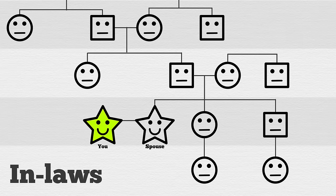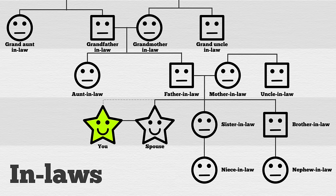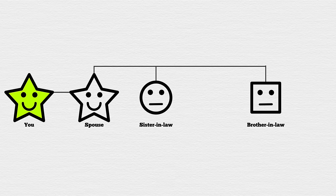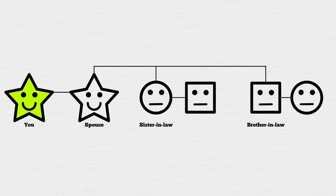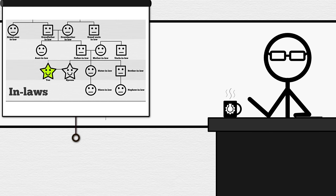When you get married, you get everyone's favorite: in-laws. You're on the same level of the family tree as your spouse's siblings — a kind of pseudo-sibling. All the new family's relationships to you are the same as to your spouse, but they get the in-law prefix. It's pretty straightforward, except your spouse's siblings are your siblings-in-law, but it's a little unclear whether your siblings-in-law's spouses are also your siblings-in-law.